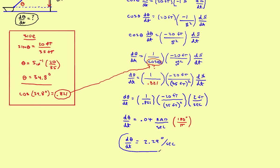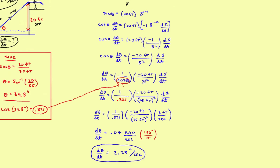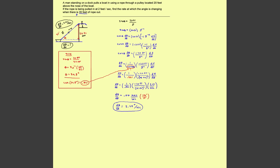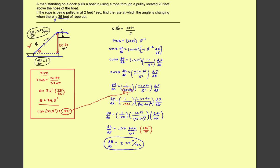Let's back up and recap the whole thing. Start with the sine relationship. Find the derivative — remember the trick of moving S up to the top to avoid the quotient rule, then moving it right back down. Plug in the things you know. When you get to theta, do a side calculation to find theta at the moment in question — in this case 34.8 degrees. Plug that back in and solve. The answer comes out in radians per second; use the conversion factor to get degrees per second. That's the sample problem using the sine of theta.